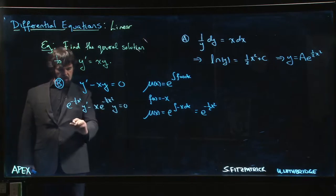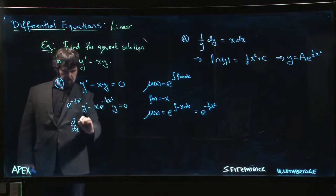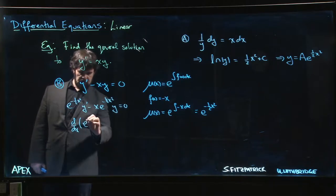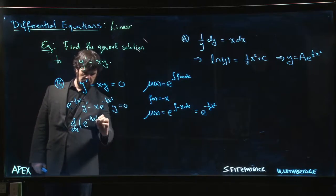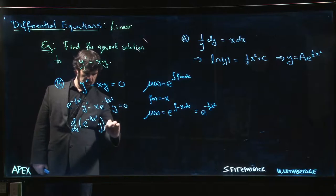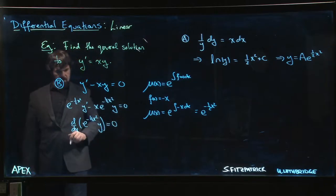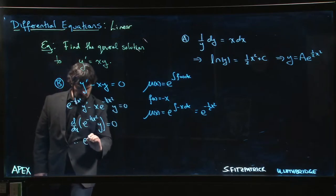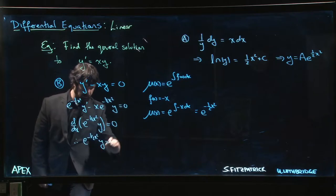And of course, the whole point of the integrating factor is that what we have on the left now is the derivative of e to the minus 1 half x squared times y. That's equal to 0. Well, that means that if the derivative is 0, this thing must be a constant. So e to the minus 1 half x squared y is equal to some constant.